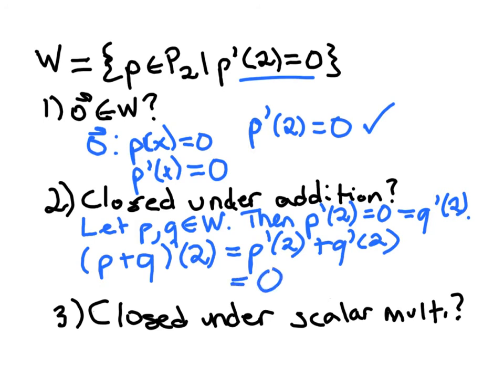I know that the derivative of P at 2 is 0. I know that Q at 2 is 0, and 0 plus 0 equals 0. So yes, the derivative of P plus Q evaluated at 2 is 0. So yes, it's closed under addition. And by the way, yes, we showed that the 0 vector is included in W.